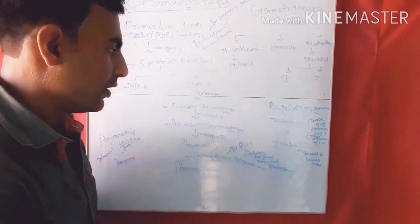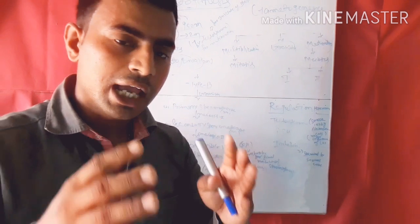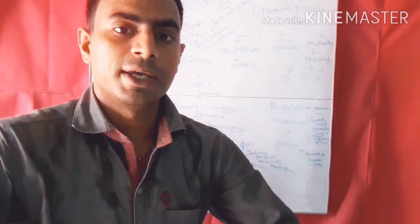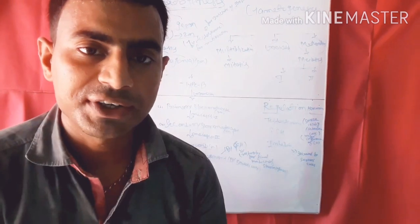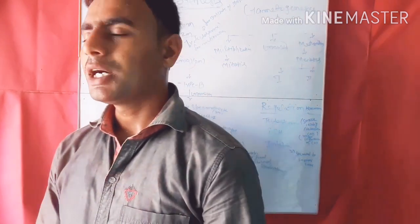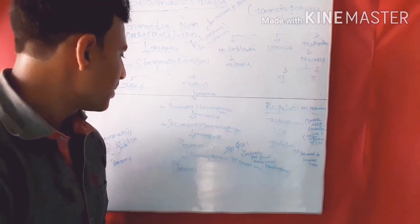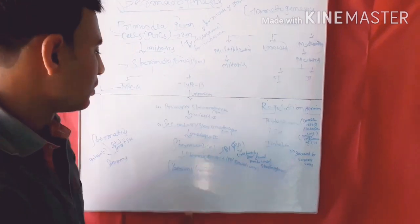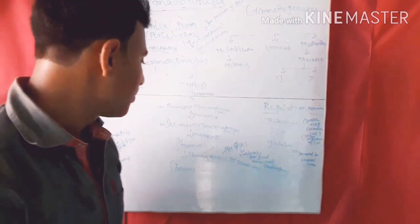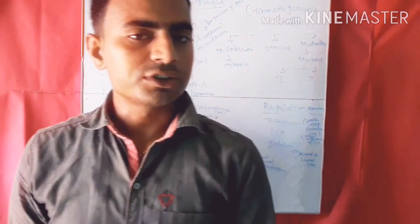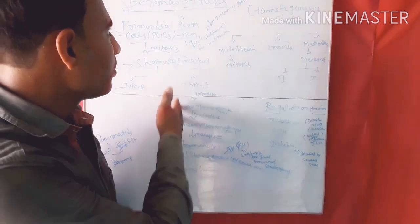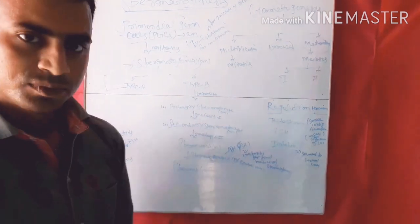Type B spermatogonia are called primary spermatocytes. Primary spermatocytes are diploid, and in them maturation (meiosis) occurs. This is maturation first (meiosis I). After maturation first, secondary spermatocytes are formed.